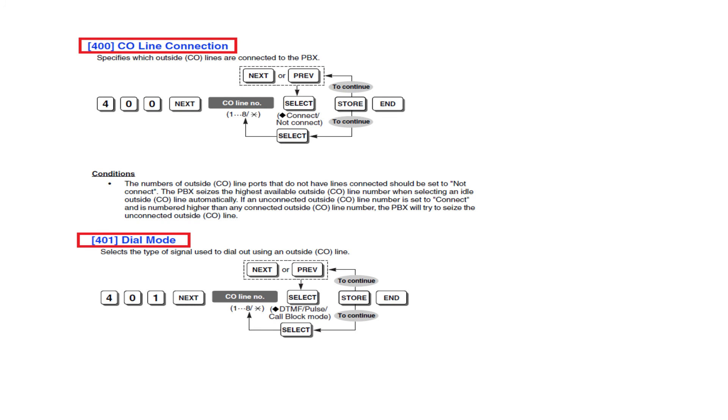Another important program is CO line connection. Program number is 400. Type program number 400 to enter CO line connection. And then press SP phone and select CO line number from 01 to 08.